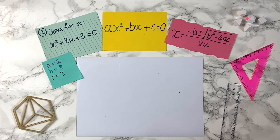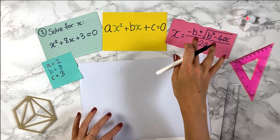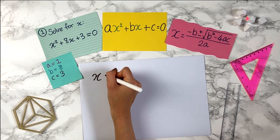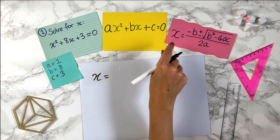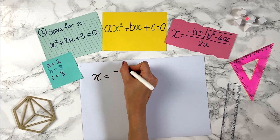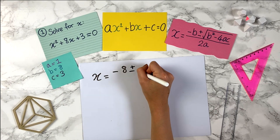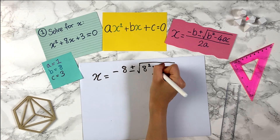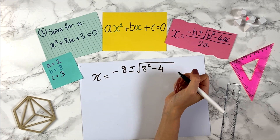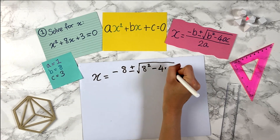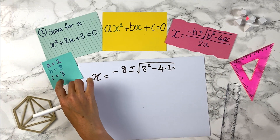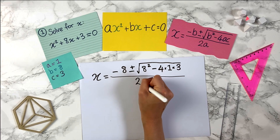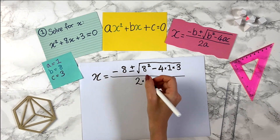The quadratic formula is really cool because just with this information we can write down the solutions straight away. So this tells us that x equals negative b — b is 8, so we want negative 8 — plus or minus the square root of b, which is 8, squared minus 4 times a, times c, which is 3, all over 2 times a, which is 1.